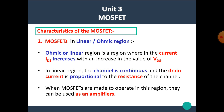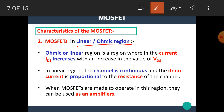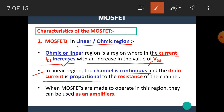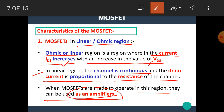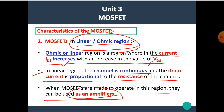The next region is MOSFET in the linear or ohmic region. The ohmic or linear region is a region where the drain current ID increases with the increase in VDS — as we increase the drain-to-source voltage, ID also increases. In the linear region, the channel is continuous and the drain current is proportional to the resistance of the channel. When MOSFETs operate in this region, they can be used as an amplifier.